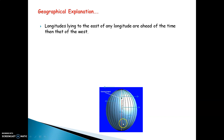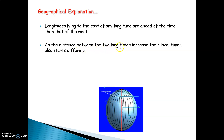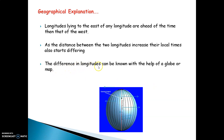The first longitude towards the prime meridian has less distance; as we go further the distance increases. The distance of all longitudes on the earth goes on increasing from the prime meridian towards both the east and the west. As the distance between two longitudes increases, their local times also start to differ. Since the distance from the prime meridian to each longitude is different, the local times also go on becoming different. The difference in local times can be known with the help of a globe or a map.